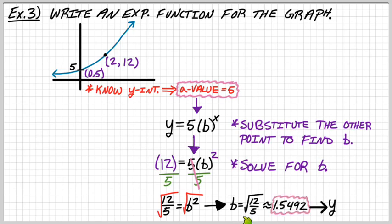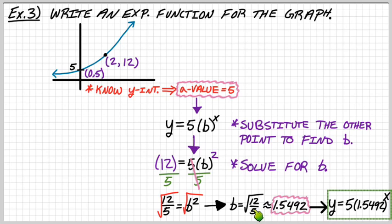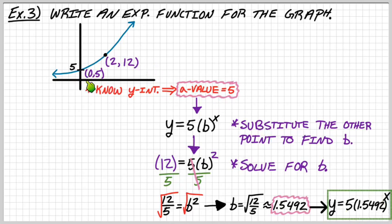I only type it in my calculator once so I only round once. You don't need plus or minus here because this is exponential growth, so keep the positive version. Now that we have our b value, we can write our equation: y equals 5 times b to the x, where b equals the square root of 12 over 5. This case was nicer because we already knew the a value from the y-intercept. That's all for these notes — see you in class.